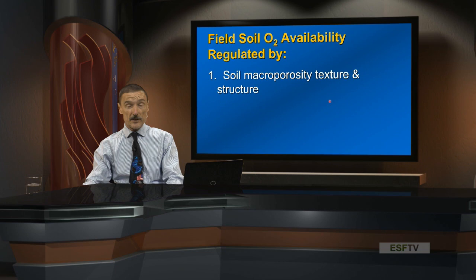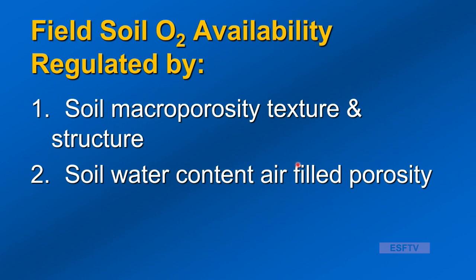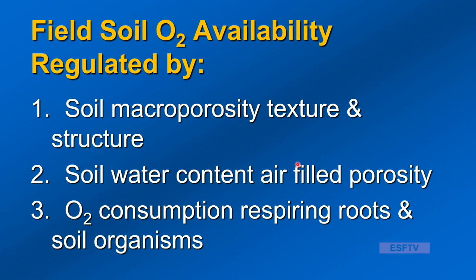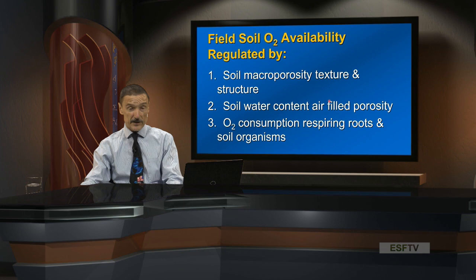We're continuing ideas from soil physical properties through soil water and now into aeration — aeration is the other side of water. If pores have no water, there is a pathway for air. The soil water content and air-filled porosity — how much of total pore space is filled with air versus water — governs the capacity to move oxygen through and carbon dioxide out. The users are also a factor: roots, soil organisms, and all aerobic organisms consuming oxygen through respiration.